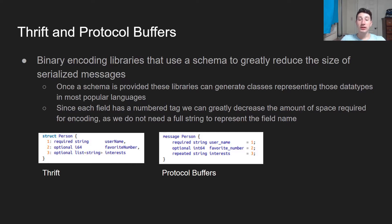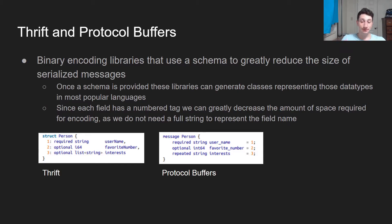Thrift and Protocol Buffers are two libraries created by Facebook and Google, respectively. I think Thrift has since been open-sourced to the Apache license, but basically all they do is create very compact binary encodings. They're able to do so because before actually creating the binary encodings, in Thrift and Protocol Buffers you specify a schema of the type of message that you're going to encode. Once this schema is provided, you can use code generation tools in your IDE to represent classes for all these types of messages. The way they work is that each field within a message actually has a number, and that number allows you to very compactly express which field it is you're sending — as opposed to having to write out the entire name of a string.